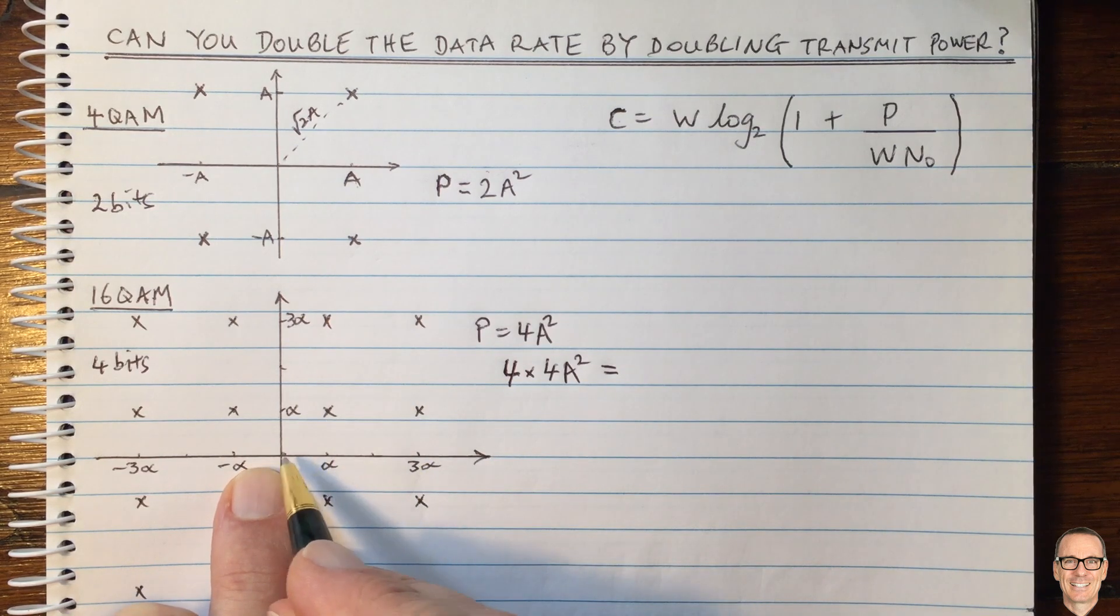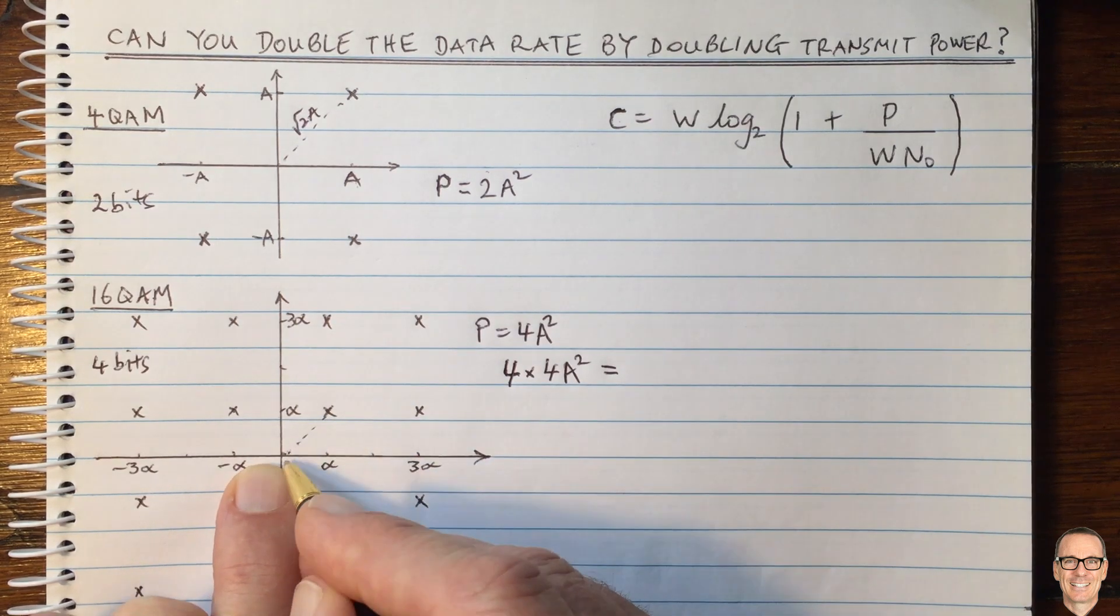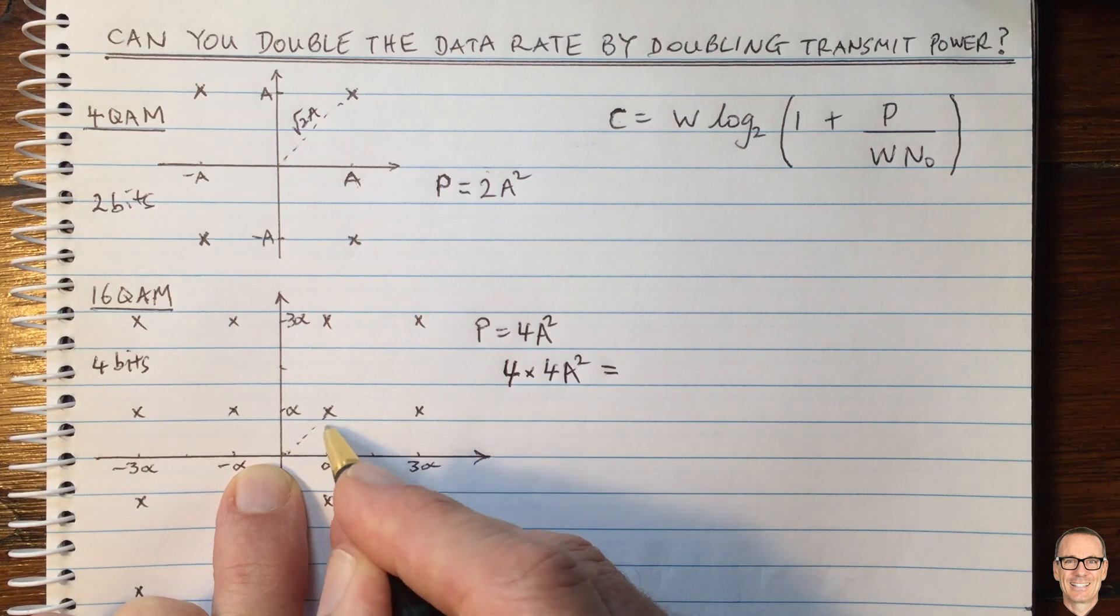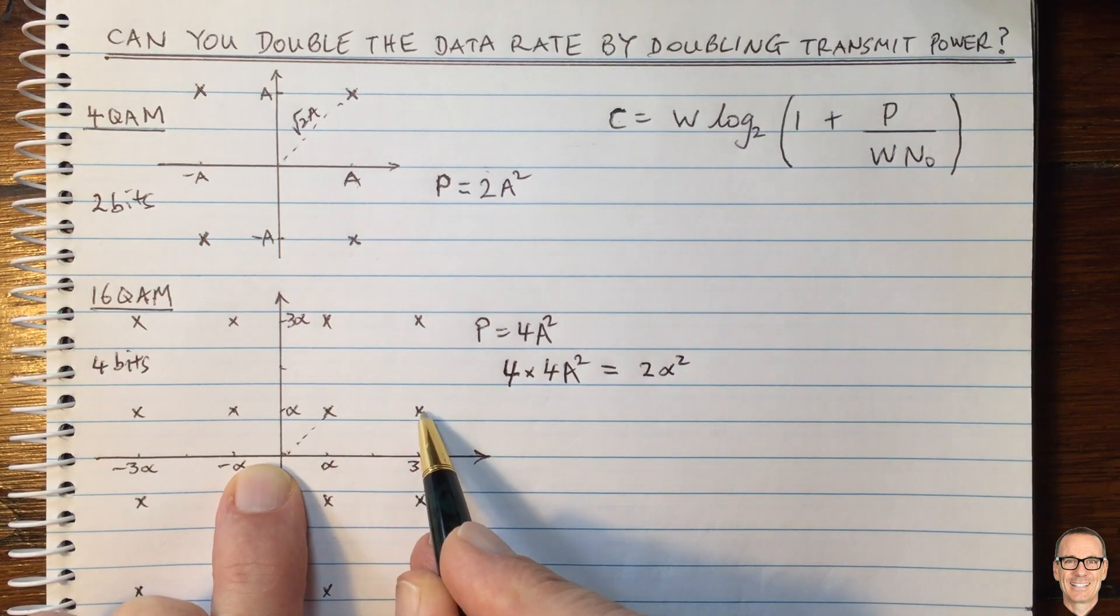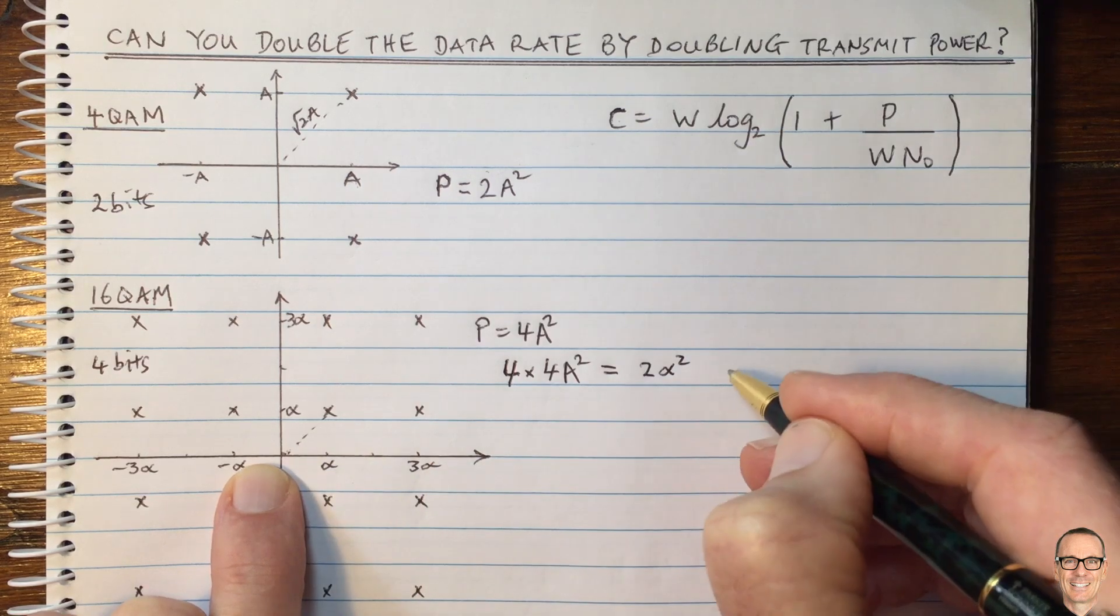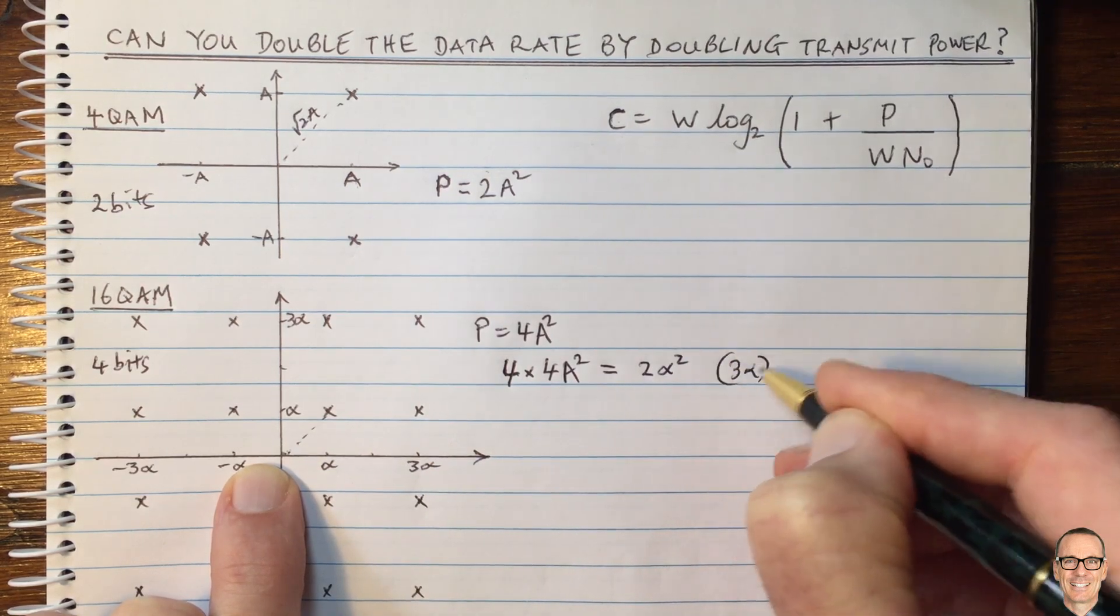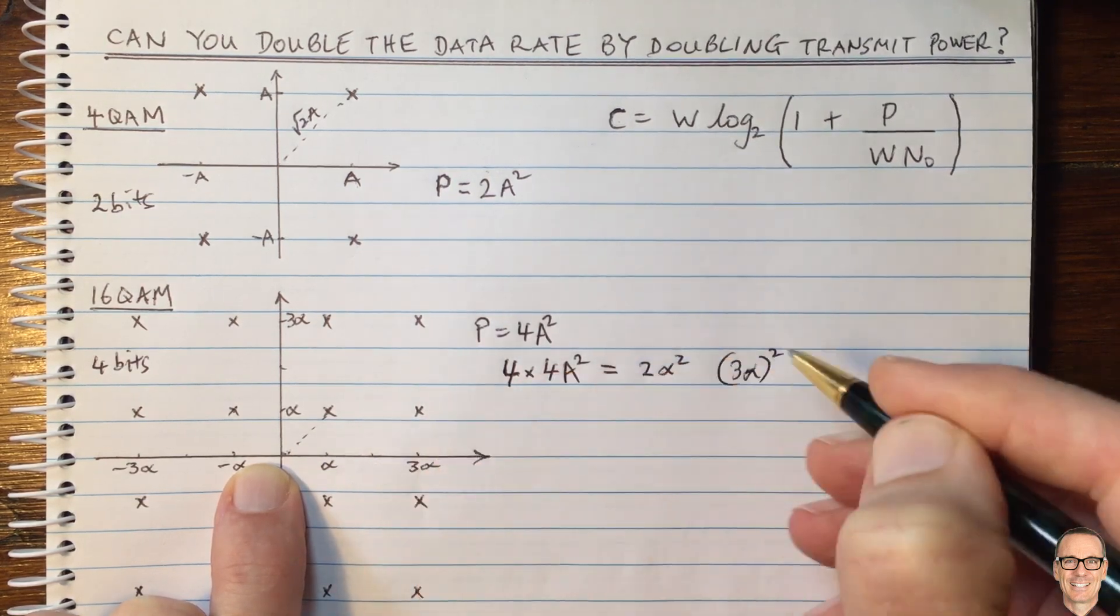So this one is the power for here. We'll be squaring this distance here. And this is alpha squared plus alpha squared is two alpha squared. The power for this one is three alpha squared plus alpha squared.